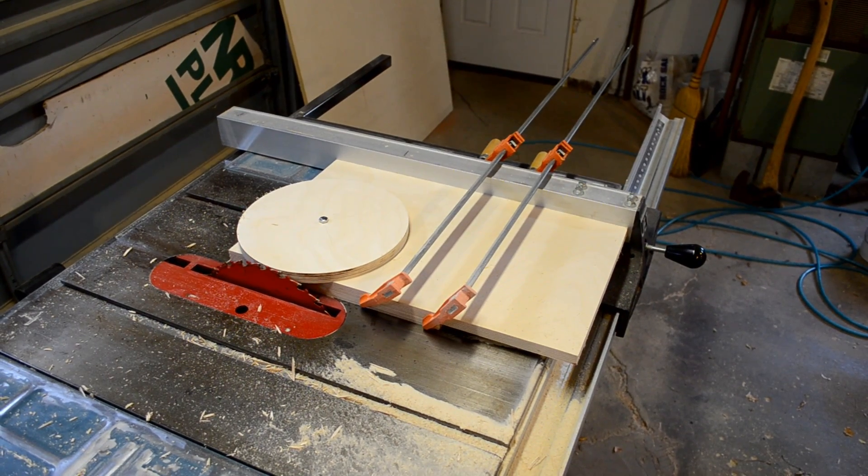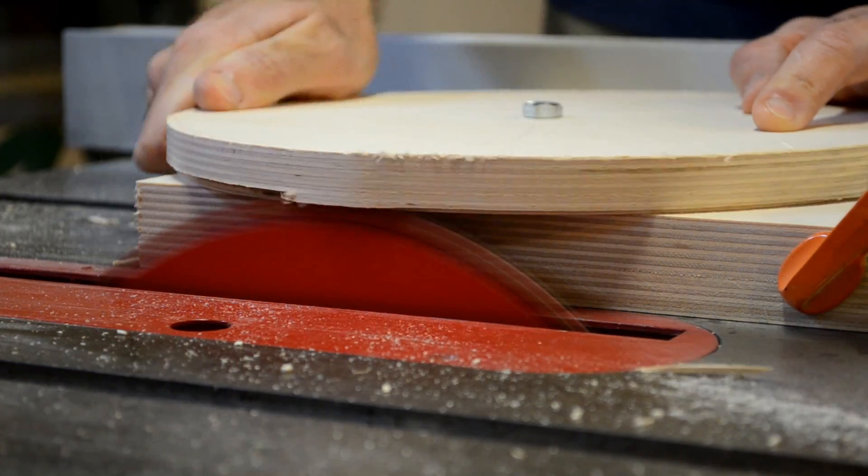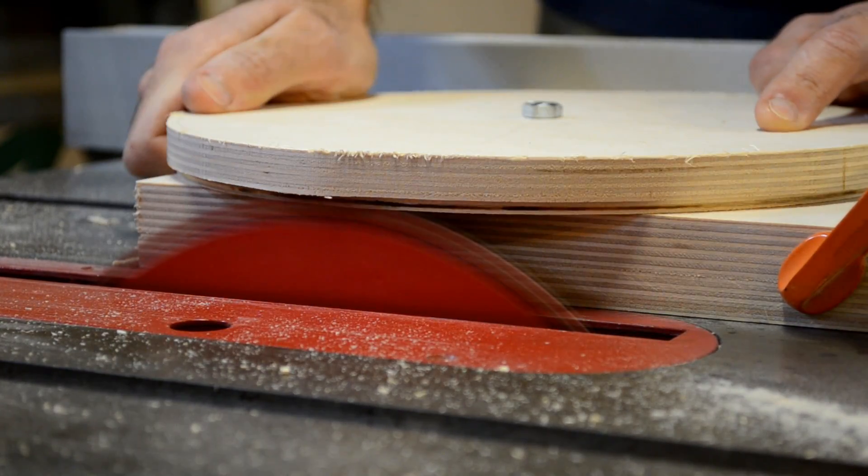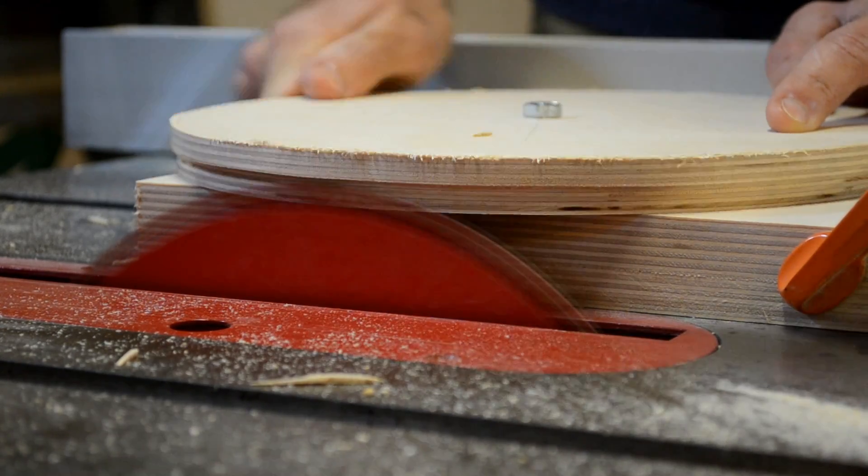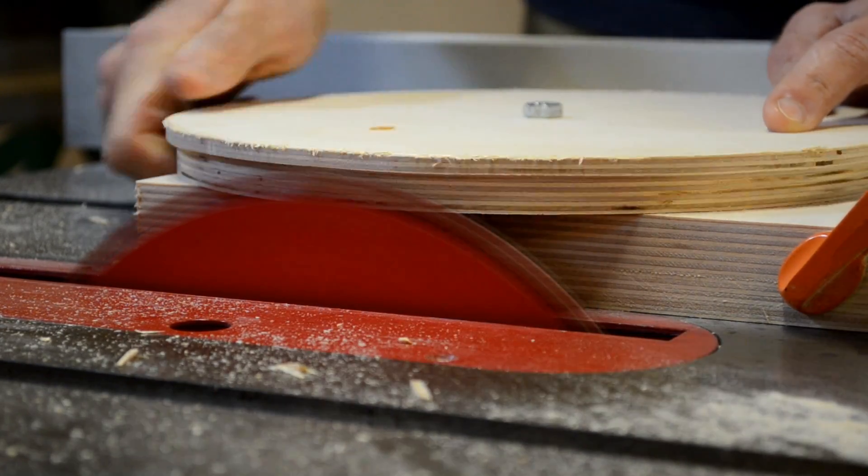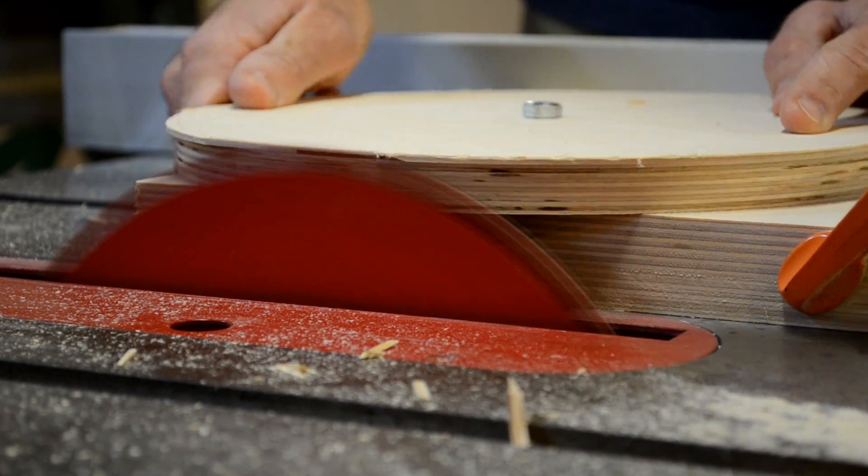Then we'll head over to the table saw and use a pretty simple jig. Raising the blade, particularly into a rotatable piece like this, is generally not recommended, but we did it slowly. It had a good grip. There wasn't much play vertically on that, and it never fell out of control for any of the three wheels that we made. And they turned out great.